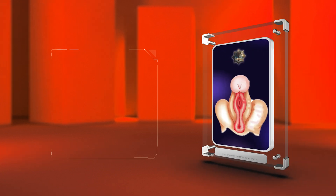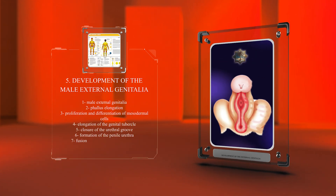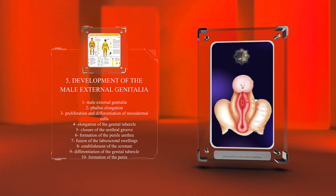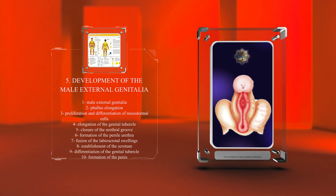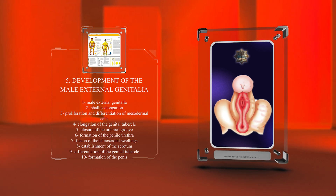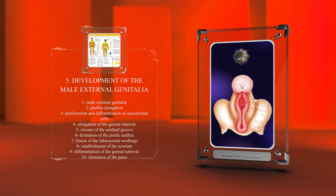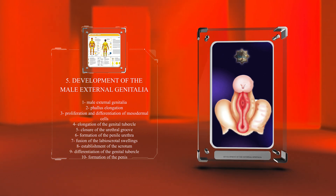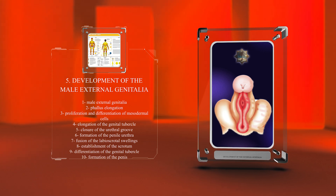In males, the formation of the external genitalia undergoes several intricate processes. Phallus elongation occurs through the proliferation and differentiation of mesodermal cells, resulting in the elongation of the genital tubercle. Concurrently, the urethral groove, which initially runs along the ventral surface of the genital tubercle, closes to form the penile urethra. The fusion of the labioscrotal swellings establishes the scrotum, and the differentiation of the genital tubercle leads to the formation of the penis.